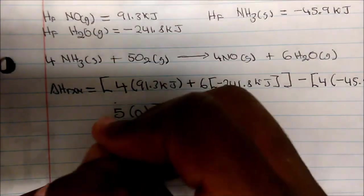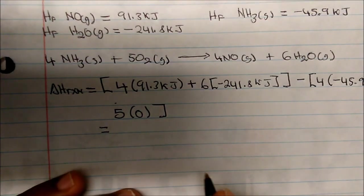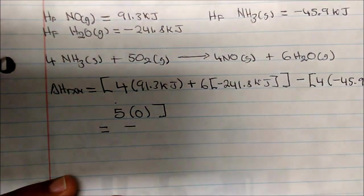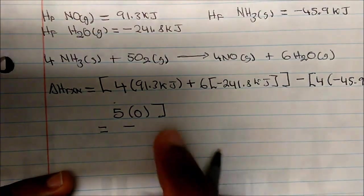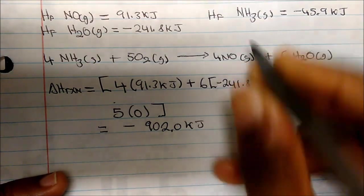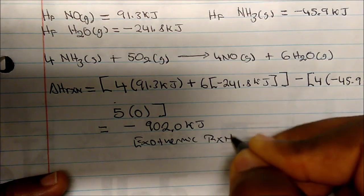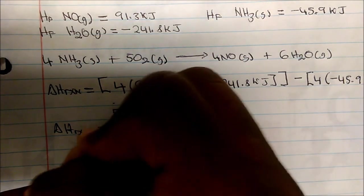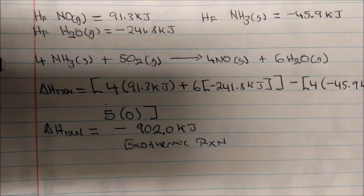Now we just plug this into our calculator, but we've got to be very careful with how we plug it in — I usually do it step by step. Plugging in four times 91.3 plus six times negative 241.8, minus four times negative 45.9, minus five times zero, I get approximately negative 902.0 kilojoules. This constitutes an exothermic reaction, and that is the delta H of the reaction.